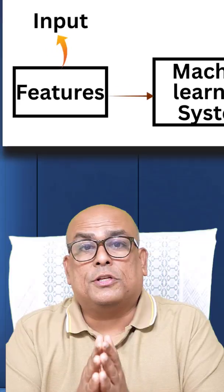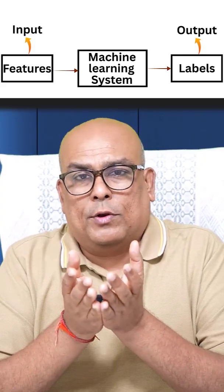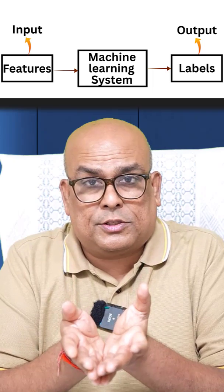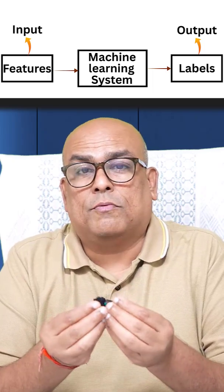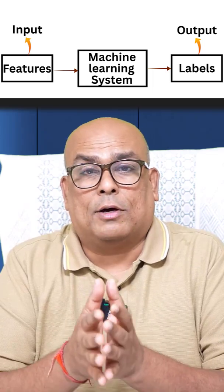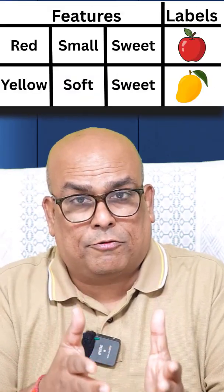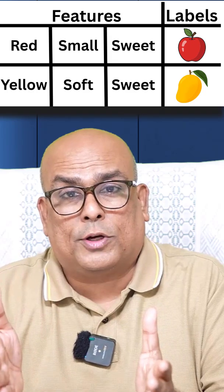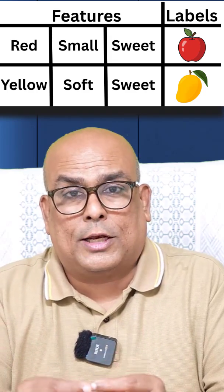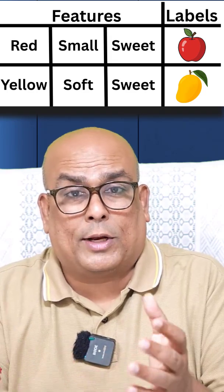Let us understand labels and features. Features are inputs and labels are output. You will give the features to the machine learning system and the machine learning system will give out the label to you. For example, if you have a machine learning system which understands fruits — if you give it red, small, sweet, those three are the features, and it will give you the output as apple.